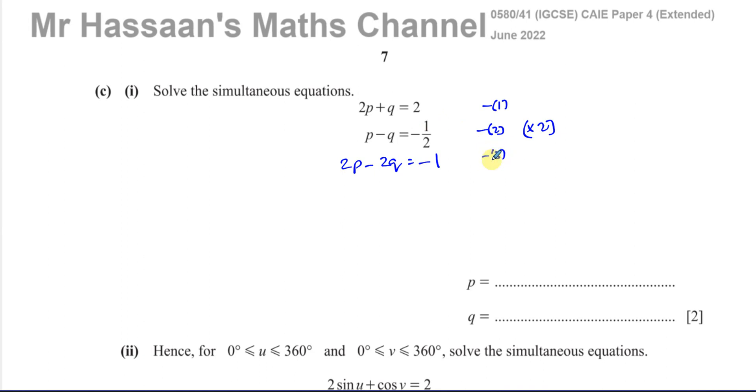That becomes equation 3. If I write equation 1 underneath it, you've got 2p plus q equals 2. In these two equations, the p's have the same coefficient and sign. So I'll do equation 1 minus equation 3. I'm going to subtract upwards because the q term will end up positive, which is easier to deal with.